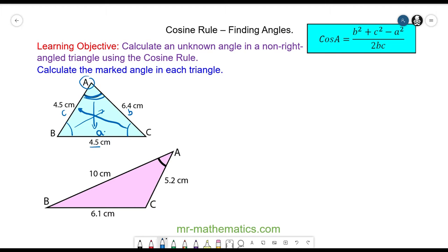So now we can substitute these values into this formula where we have the cosine of A, and A is the angle we're trying to find, is equal to b squared plus c squared minus a squared all over 2bc.